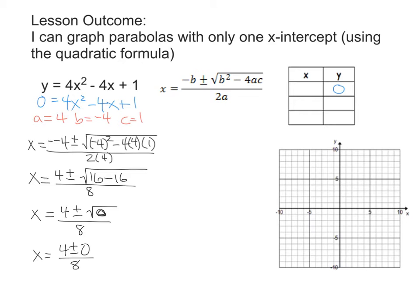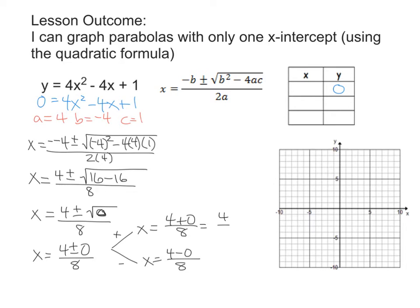Now we can split this up into plus or minus like we're used to. We get 4 plus 0 divided by 8, and then 4 minus 0 divided by 8. Well, 4 plus nothing is 4 over 8, and 4 minus nothing is still 4 over 8. So we get 4 over 8, which is 1 half, or 0.5.